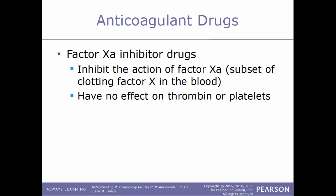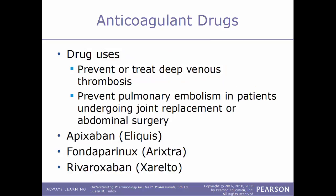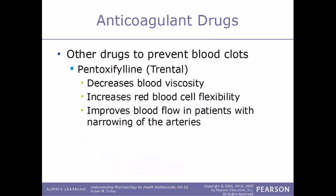Another type of anticoagulant drugs are factor Xa inhibitor drugs. These inhibit the action of clotting factor Xa, which is a subset of clotting factor 10, and have no effect on thrombin or platelets. They are also used to treat deep venous thrombosis and can prevent pulmonary embolism in patients undergoing abdominal surgeries or joint replacements. Examples include apixaban (trade name Eliquis), fondaparinux (trade name Arixtra), and rivaroxaban (trade name Xarelto).